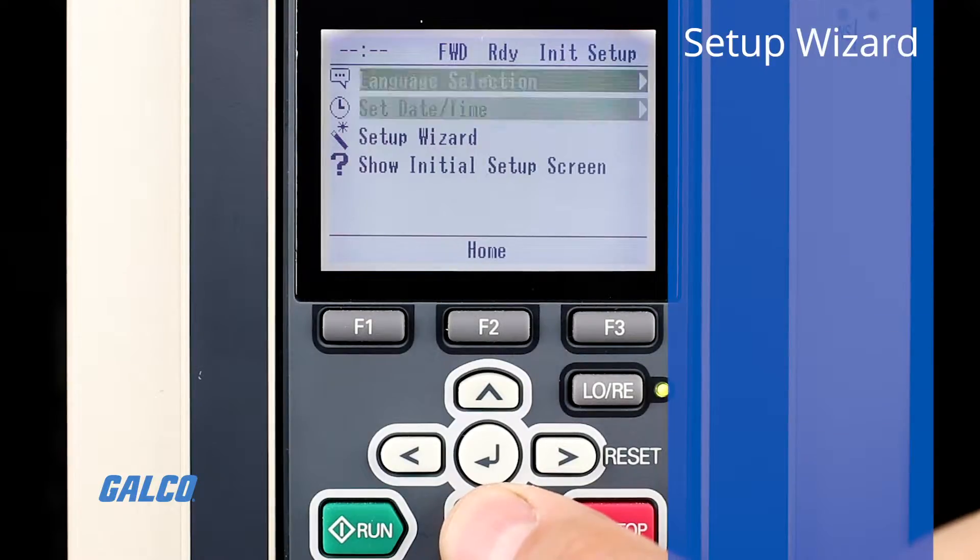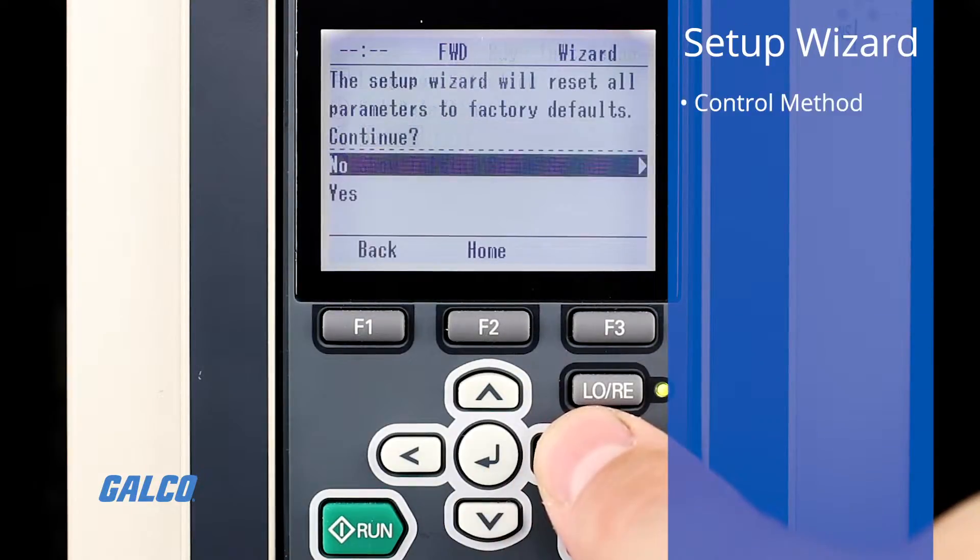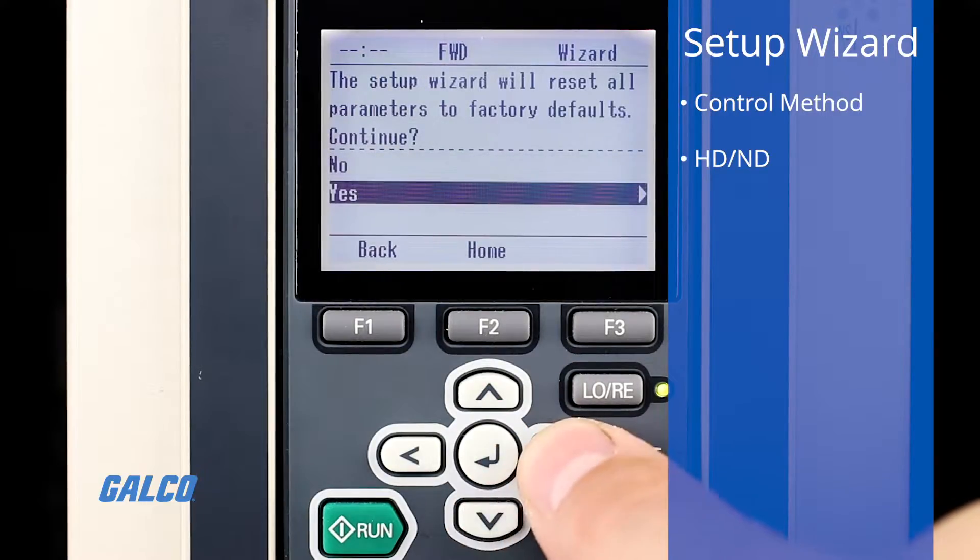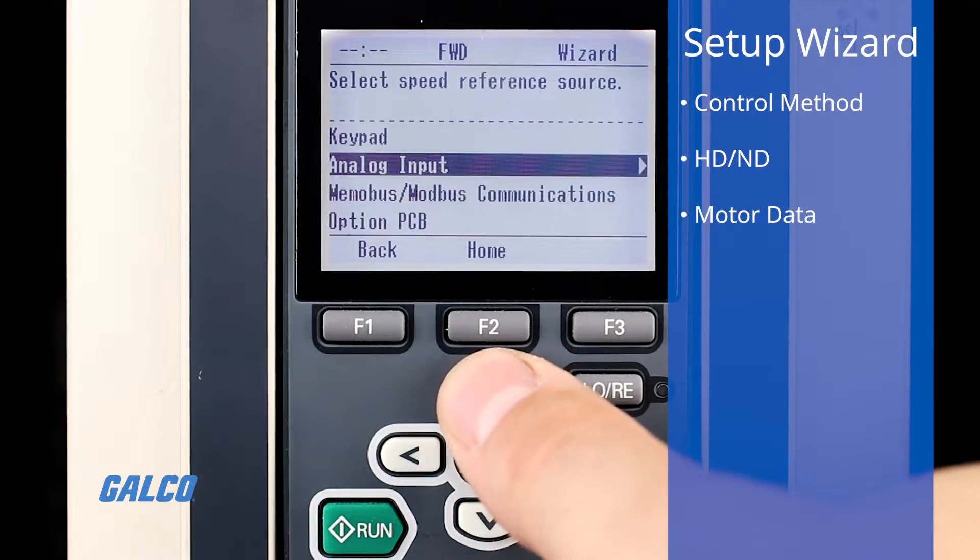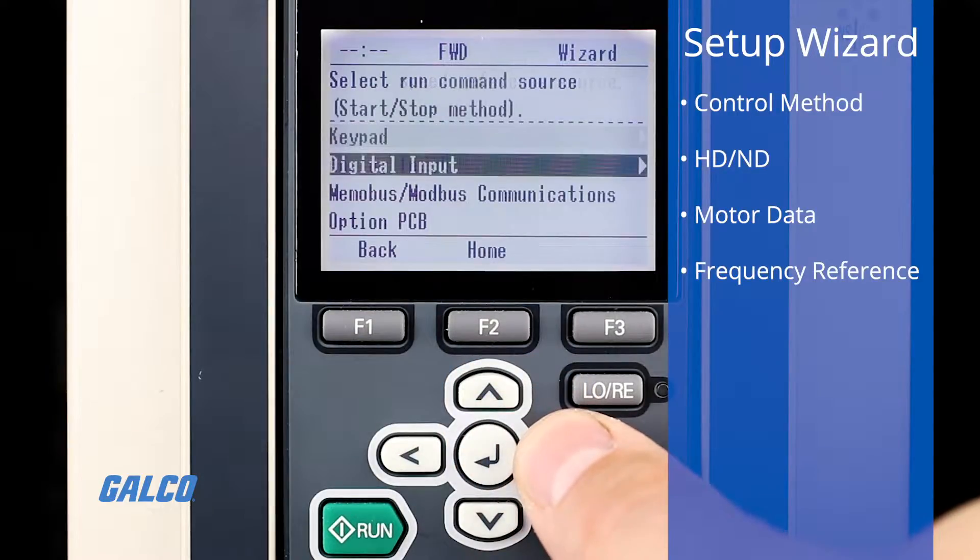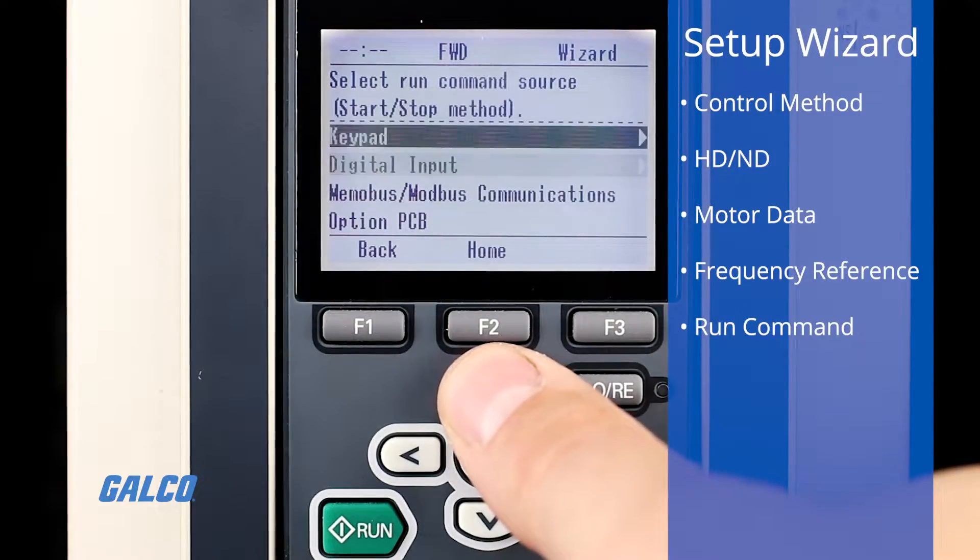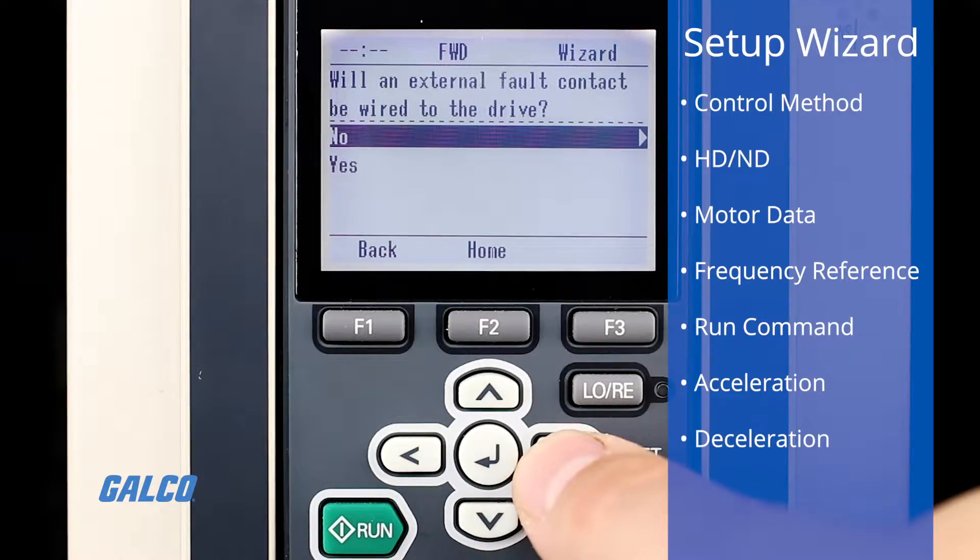This Setup Wizard will guide you through configuring control method selection, HDND selection, motor data, frequency reference, run command source, and acceleration and deceleration times.